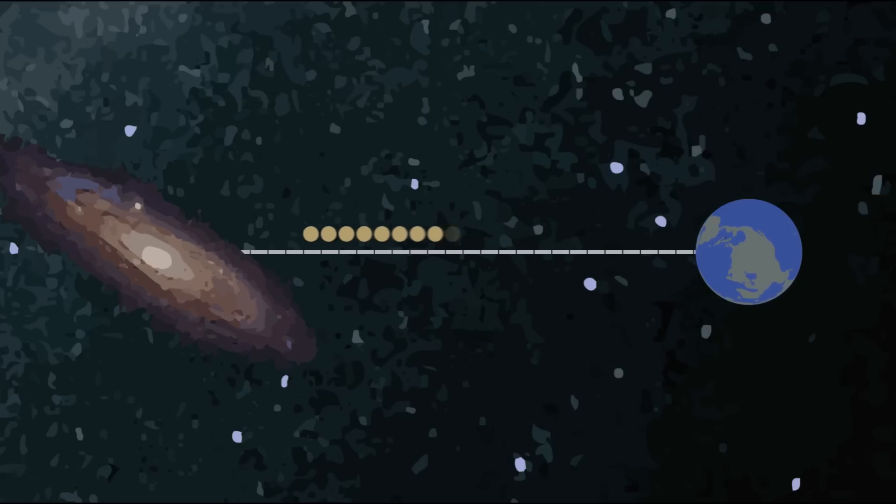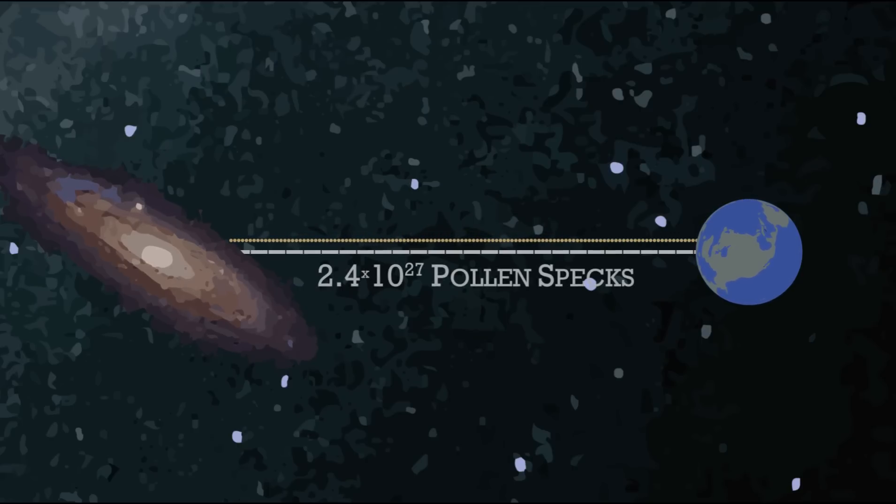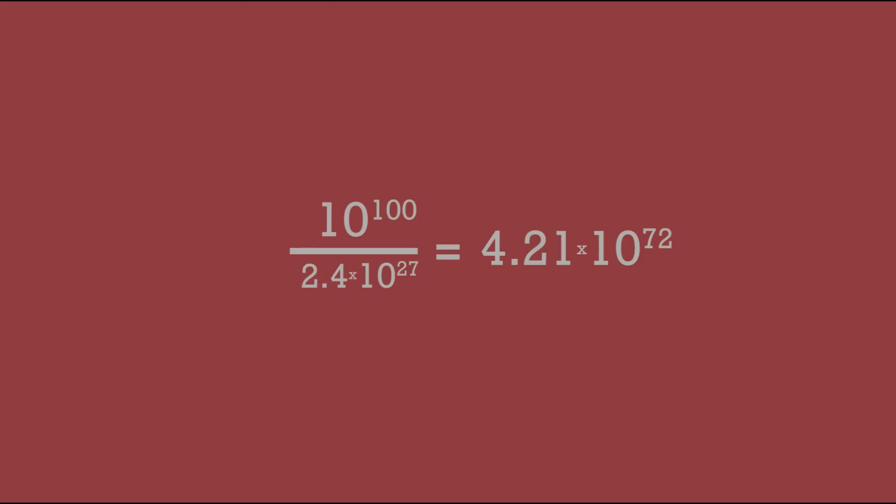Going back to our line of pollen, making a single line completely out of pollen specks that stretches to the Andromeda Galaxy would require 2.4 times 10 to the 27th specks. That's still more than 70 orders of magnitude off of a googol.